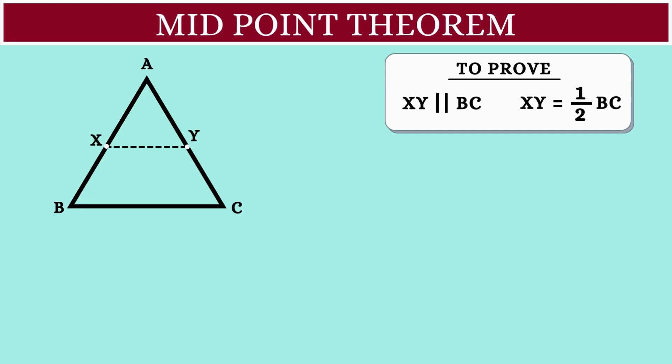Before getting started, we will do a simple construction. Let's draw a line parallel to the line AB and passing through C. Let this line be L. We also extend the line XY to meet the line L at point P.